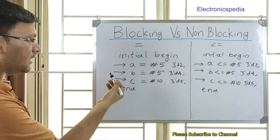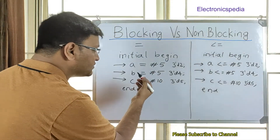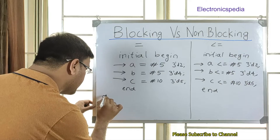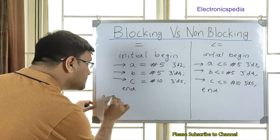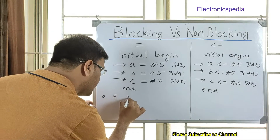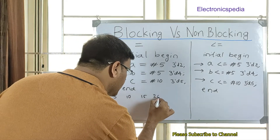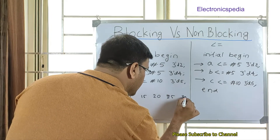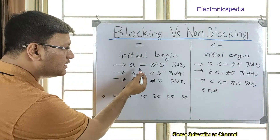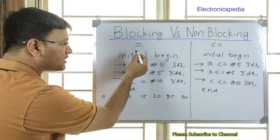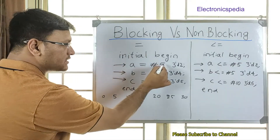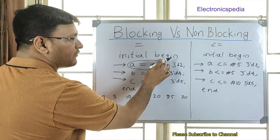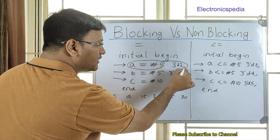Now let me write this in terms of a timestamp. This is 0, then 5, then 10, then 15, then 20, then 25, then 30. In the blocking statement, the first statement executes first: A gets a value of 2 after a #5 delay.